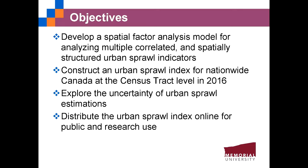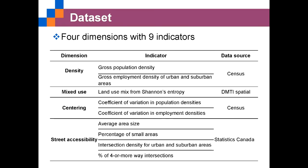The composite score will be distributed online for public and research use. To construct the composite sprawl score, we used nine indicators belonging to four sprawl dimensions. These dimensions and indicators have been widely used to characterize urban sprawl in the U.S. and other countries. All indicators were derived at the census tract level. In total, there were 5,452 census tracts in Canada.